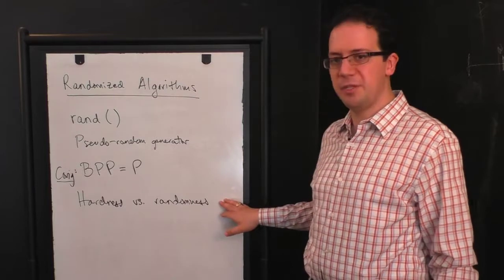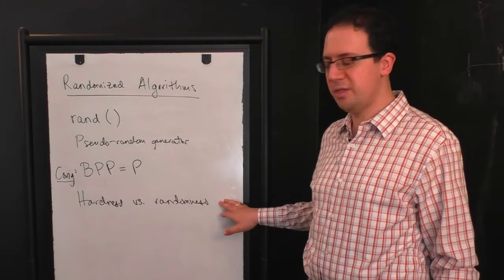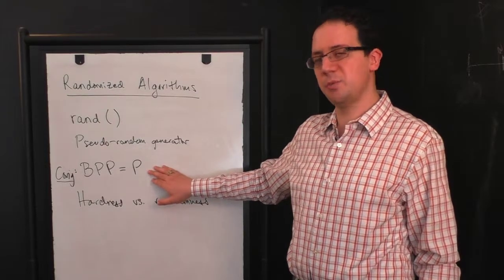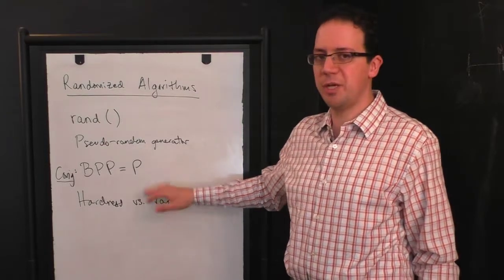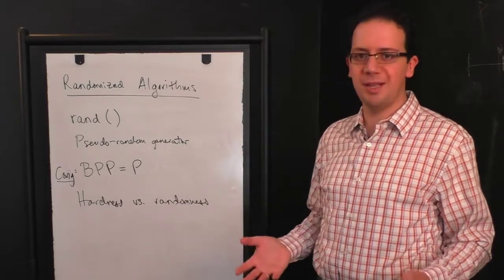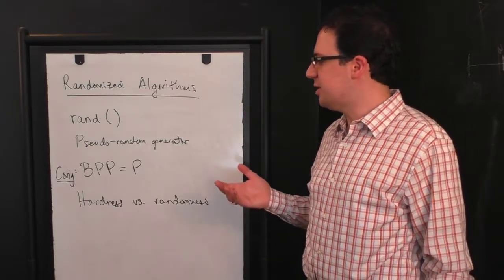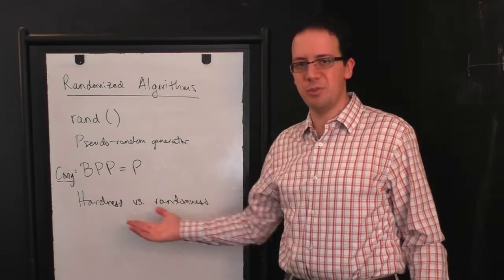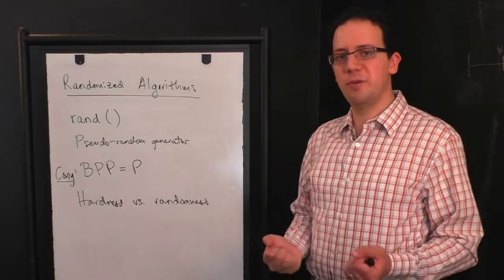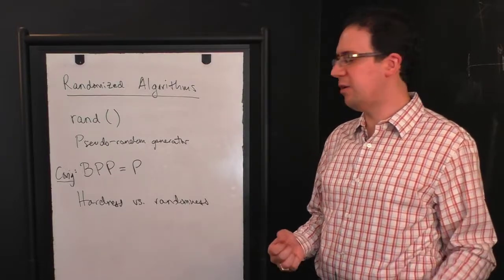And in particular, if sufficiently hard functions actually do exist, then this conjecture is true. So this is one of the reasons we believe this conjecture, because we believe that sufficiently hard functions exist. I'm not going to give you the proof of this, it's highly technical. But let me just give you some intuition for why this principle might be true. The basic idea is you take your hard function. So we're supposing that some very hard function exists.